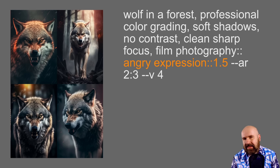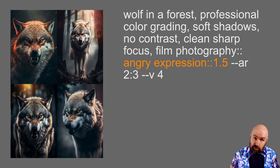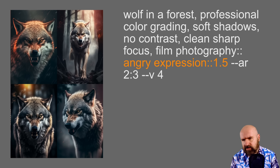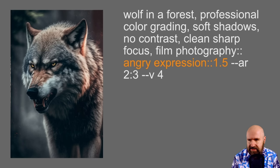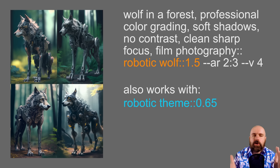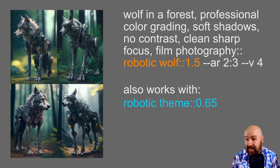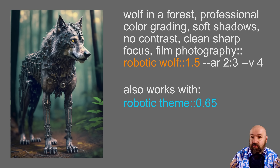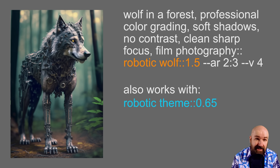Another crazy idea is adding expressions. Here I wrote angry expression with a weight of 1.5, and it works fairly well. One thing to note is that sometimes the teeth didn't come out anatomically correct. Going even further — robotic wolf at 1.5. That worked surprisingly well. We still have the wolf body and fur, and then it also has robotic parts stuck to it. As a concept and artistic work, that is absolutely amazing. I sent this to Tokenized and he said: how about trying it without wolf? It only created a robot. So he sent me another prompt with robotic theme at 0.65 — lowering the weight — and that turned out similar to this image.